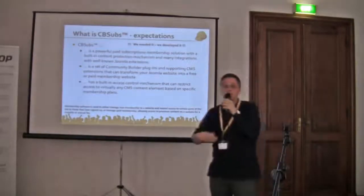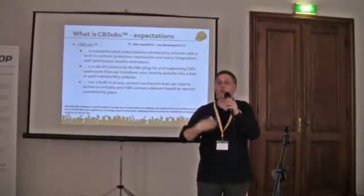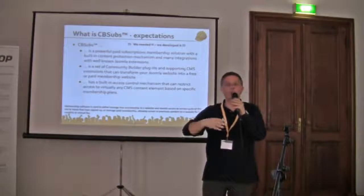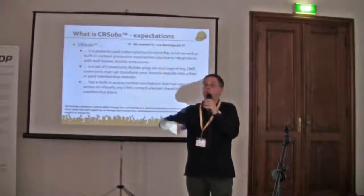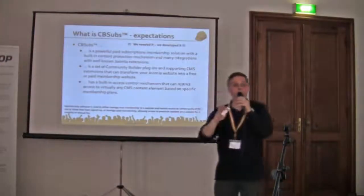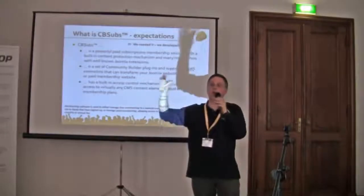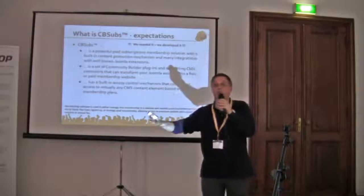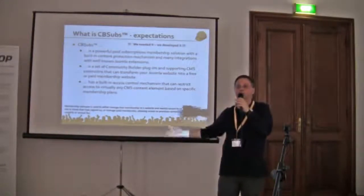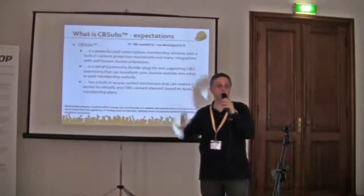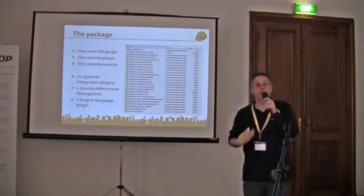CB Subs is basically a powerful paid membership management subscription system that does not really depend on any ACL system — it has its own built-in functionality. So you don't have to install JUGA or rely on Joomla 1.6 ACL. Everything is self-contained in CB Subs. All this is tightly integrated with Community Builder, so you can use the CB user manager in the back-end to see who subscribed to which membership package. You can even use the CB mass email functionality to send personalized private messages — for instance, to tell all your advanced members there's a new release.